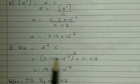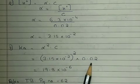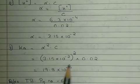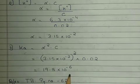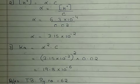So simply following the log calculation, we get our Ka value as 19.8 into 10 ratio to the power minus 6.